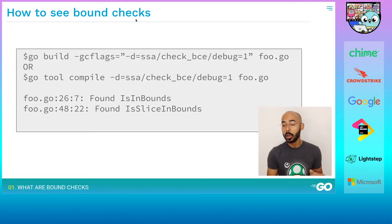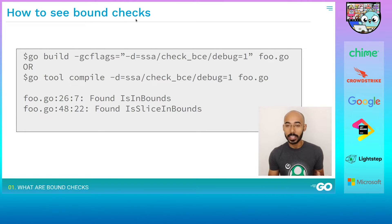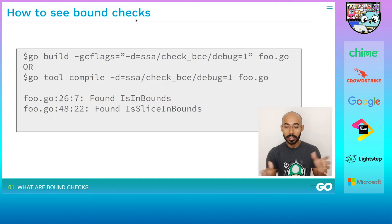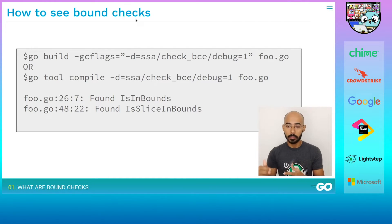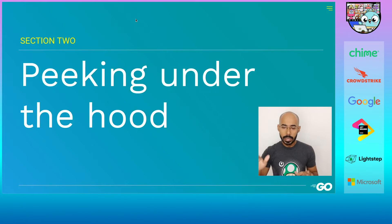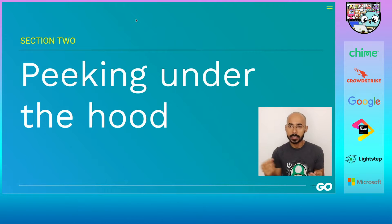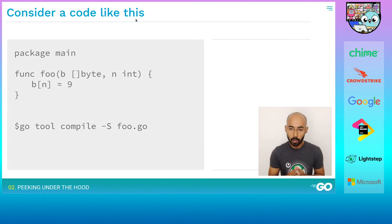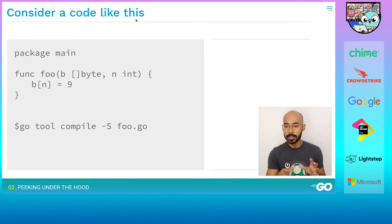Before we go into that, we need to be able to see where bounds checks are being inserted by the compiler. There is a compiler command we can use to verify where bounds checks are being inserted. I'm not going to go into the details of the command structure, but essentially when we run it, it will show output like 'found is in bounds' or 'found a slice in bounds', indicating the lines where bounds checks are being inserted.